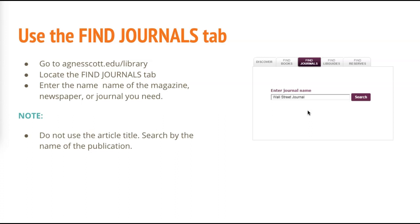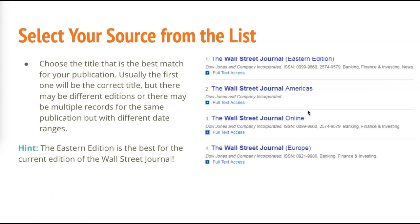If it's from the New York Times, put in the New York Times, not the title of the article. Then what will appear is a list of titles. We put in one of the confusing ones — it doesn't always pop up with the same name in different formats. The Wall Street Journal has multiple editions published in different places, so this is one of those confusing ones.